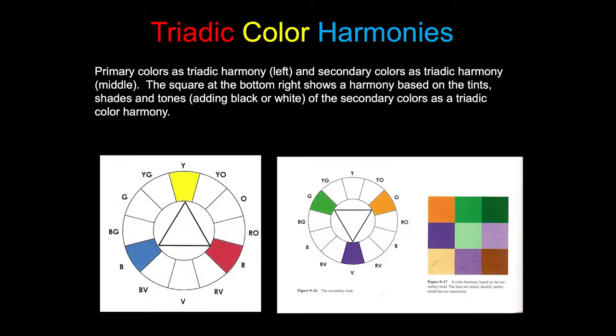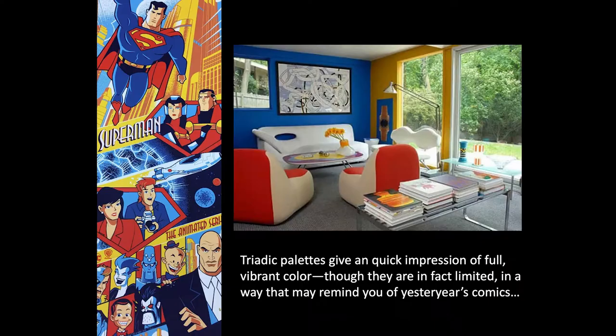The triadic color harmony is based on a triangle inscribed in the color circle for selecting hues. Primary colors, for example, would be a triadic harmony. Secondary colors would also be a triadic harmony. Usually when we talk about triads, we talk about an equilateral triangle where the three points are as far apart as possible on the color wheel. When you add white to a color the result is called a tint, when you add black the result is called a shade, and when you add gray we call that a tone of the color.